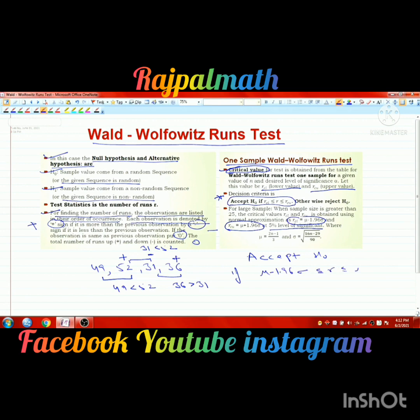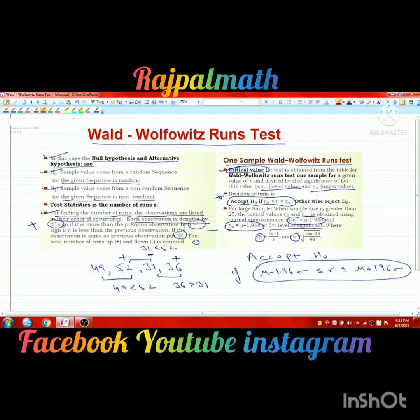The acceptance region is: mu minus 1.96 sigma is less than or equal to R, which is less than or equal to mu plus 1.96 sigma. If this condition holds, we accept H0; otherwise we reject it. Mu and sigma can be calculated using their respective formulas. Now let's do one example.